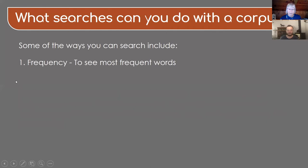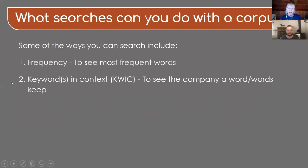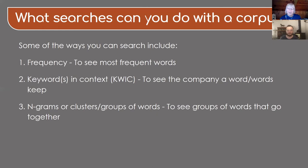And you can also arrange those words alphabetically or by frequency. We can also look at something called KWIC, or keywords in context, and that allows us to look at the company that words keep. It also allows us to see if there are any patterns we can recognize, which can be particularly helpful for language instruction. And then we can also look at things called n-grams — that sounds very scientific, but n just stands for the number. So we can look at clusters or groups of words.